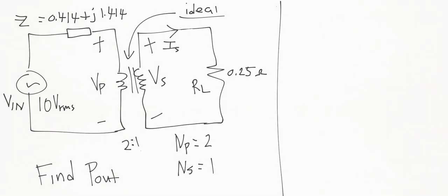As an equation that means we'll call it R reflected, and that equals Np over Ns, which is the turns ratio squared, times RL. We know what the turns ratio is - it's 2 to 1.